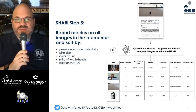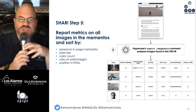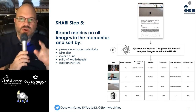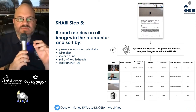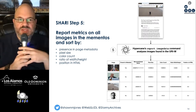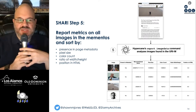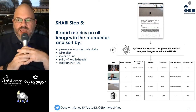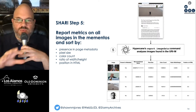Sherry, step five, reports metrics on all the images in all the mementos. We're gathering information like whether it was present in page metadata, how large it is in pixels, how many colors it has, what its ratio of width to height is, and what its position is in HTML. We use this information to try to determine the striking image for the overall story.